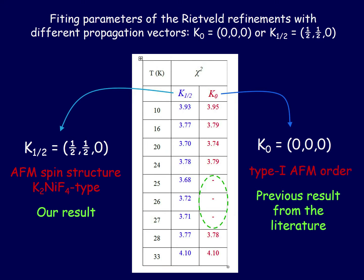In order to analyze the magnetic diffraction, the first thing we have to do is choose a propagation vector. Previous studies have used the propagation vector K₀, which leads to a type I antiferromagnetic order at low temperatures.